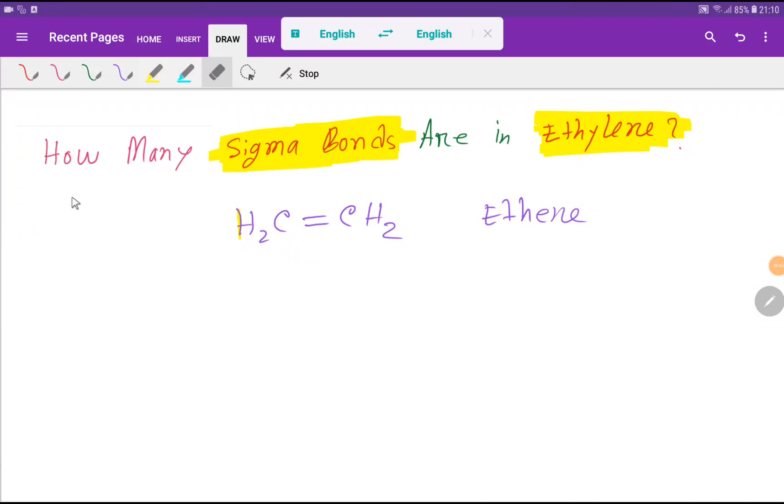Hello everyone, welcome to Chemistry Tutorial 360. Today we're going to learn the answer to the question: how many sigma bonds are in ethylene? The IUPAC name of ethylene is ethene. Look at here, this is the formula for ethylene.